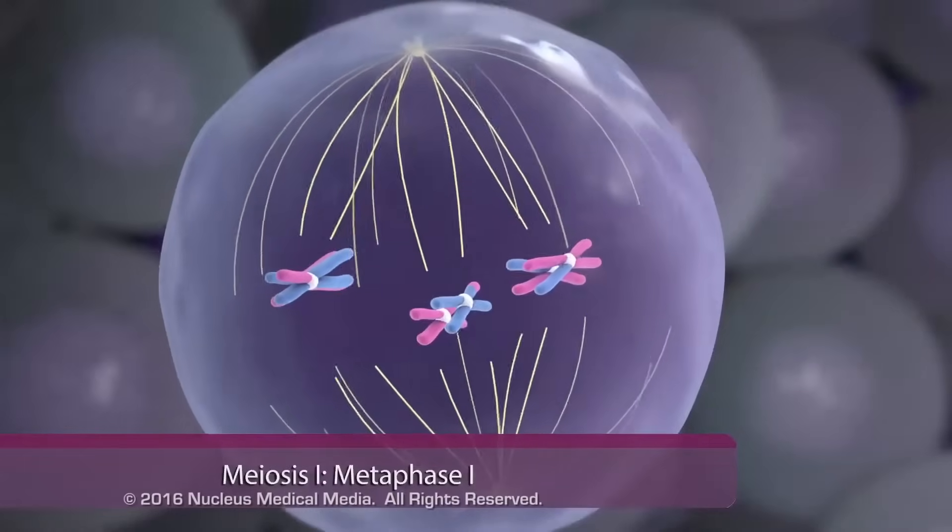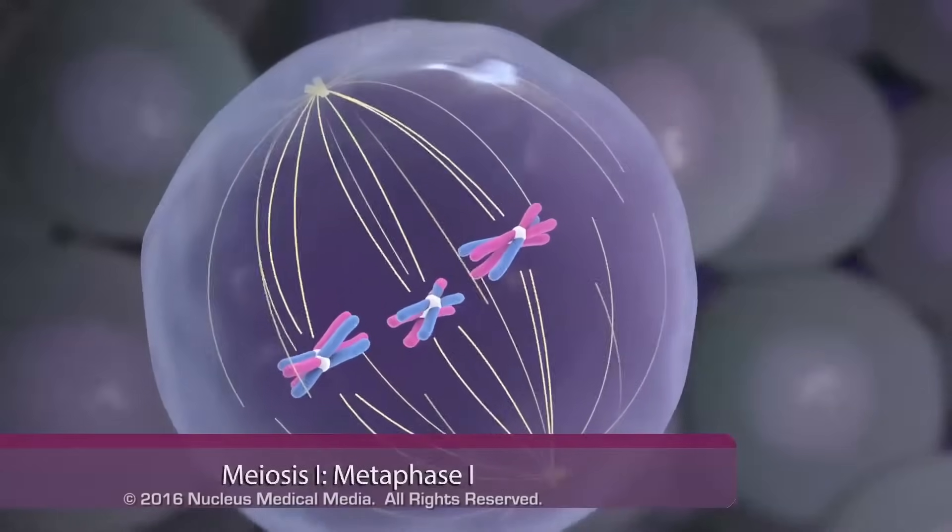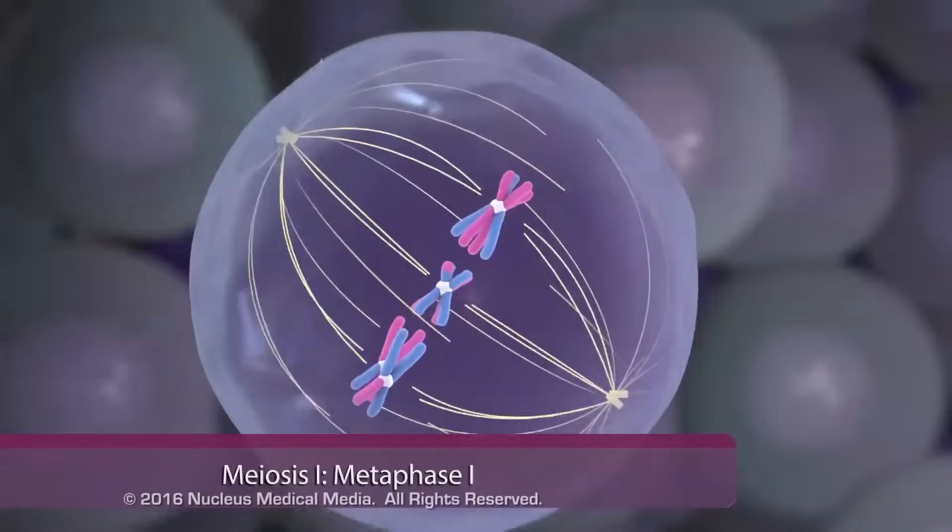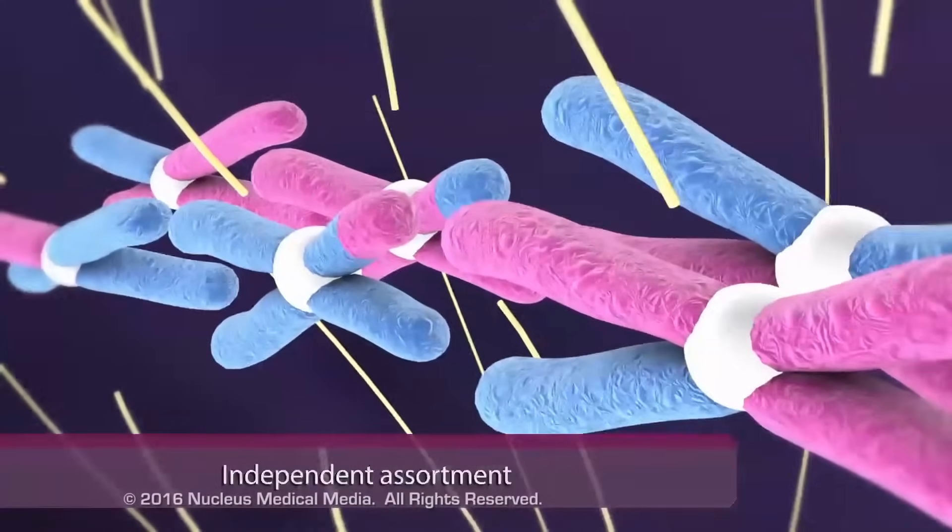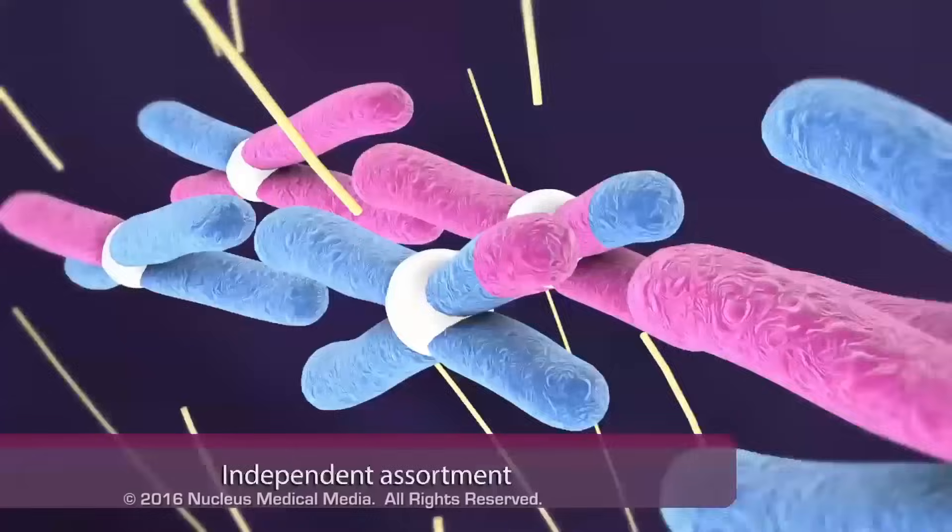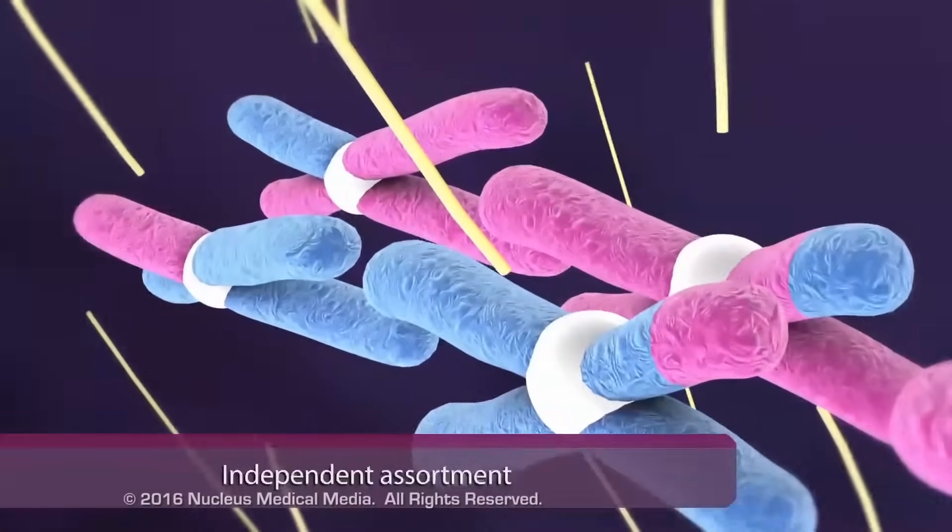During metaphase I, homologous chromosome pairs line up in the center of the cell. Each pair can line up randomly from left to right, in a process called independent assortment.